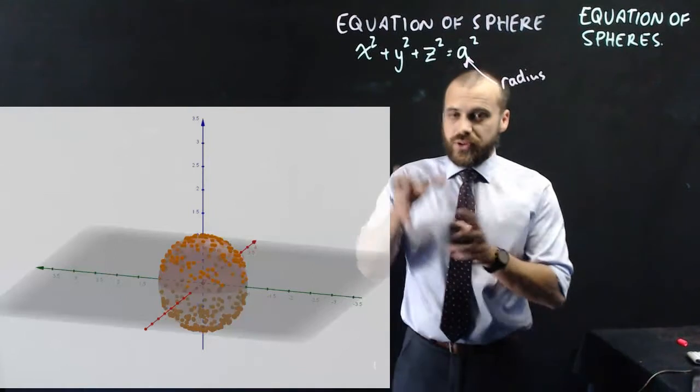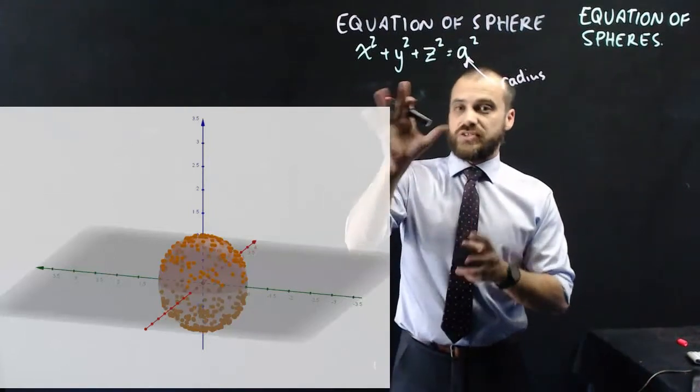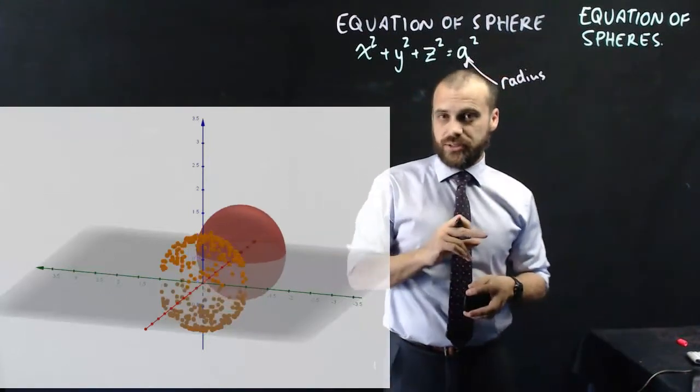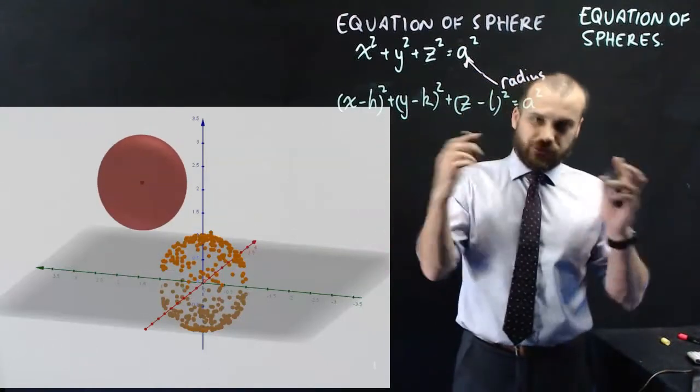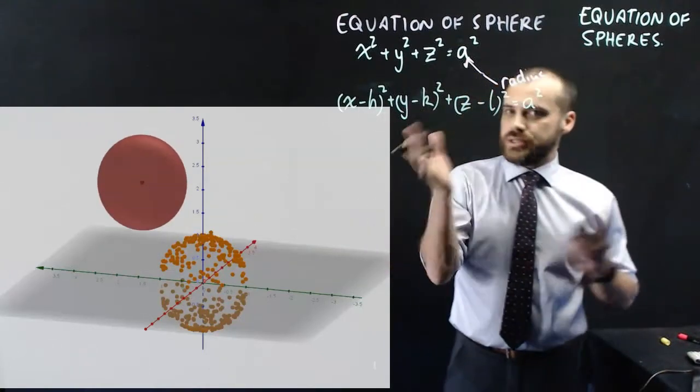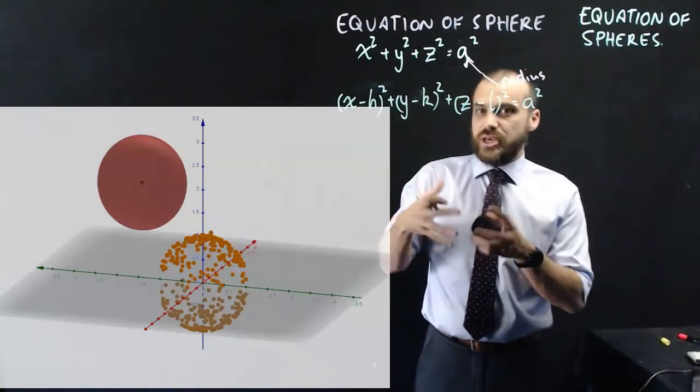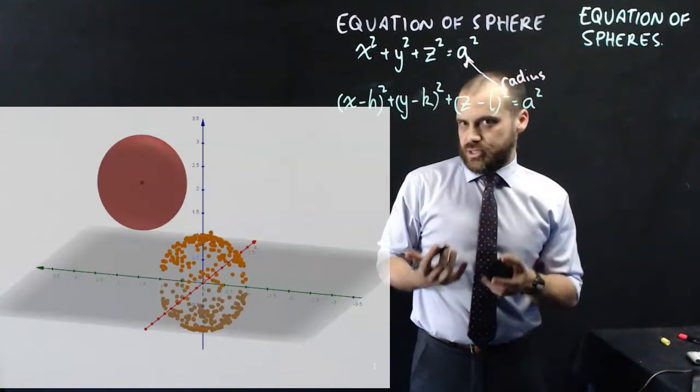We can move this sphere around using this formula, just by subtracting h, k, and l from x, y, and z, respectively. These are just numbers, and this is going to move our sphere in the same way that you would expect it to move.